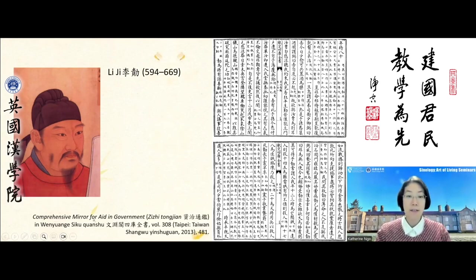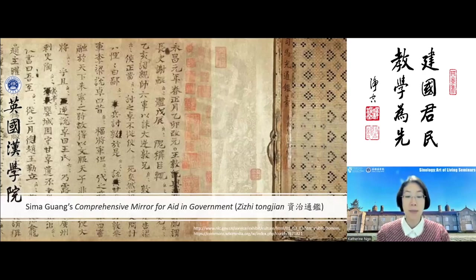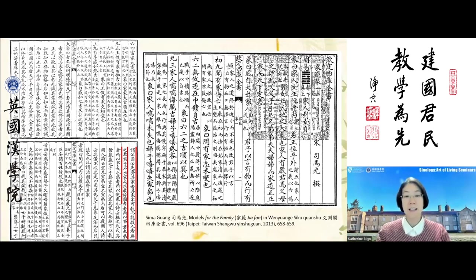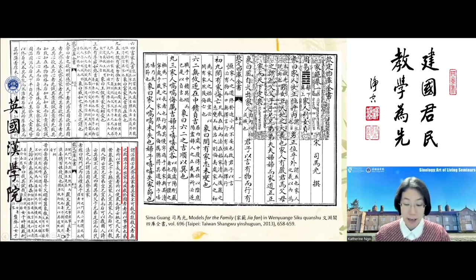Finally, the famous historian Sima Guang of the 11th century was known for his magnum opus, the Comprehensive Mirror for Aid in Government, but also compiled a text called Models for the Family — focused on family practices and family education for his descendants. This shows his twin concerns: the state and the family, which he considered equally important. In this Models for the Family, he includes the very passage we just read in the Highest Learning, and he was able to live out these virtues in his life.